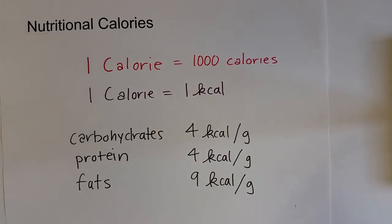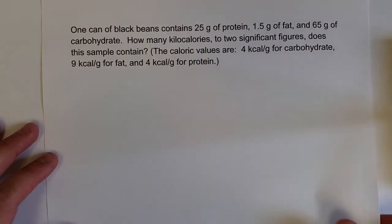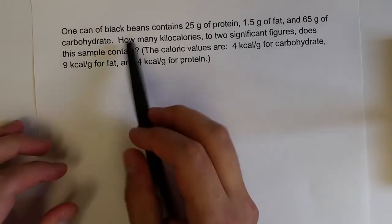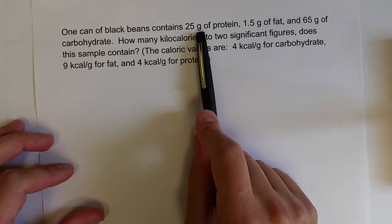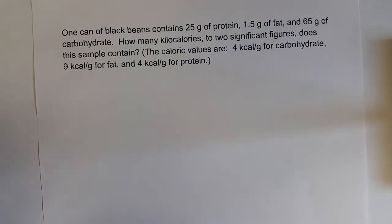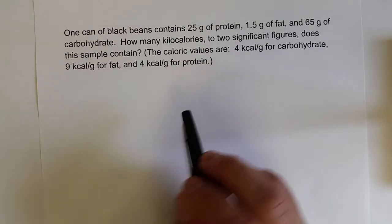And so using that information, you can calculate the amount of energy, in terms of calories, you consume, with different foods. And so here's a problem using that information. We've got a can of black beans that contains 25 grams of protein, 1.5 grams of fat, and 65 grams of carbohydrates. How many kilocalories does this sample contain? And here's the caloric values again.